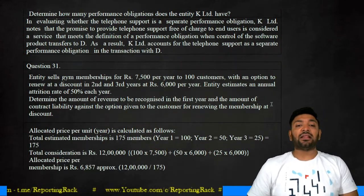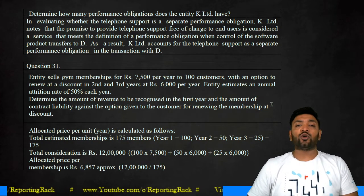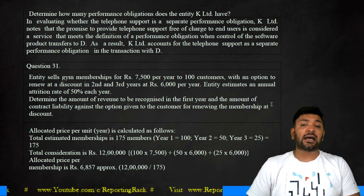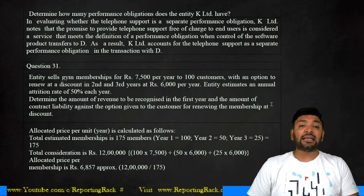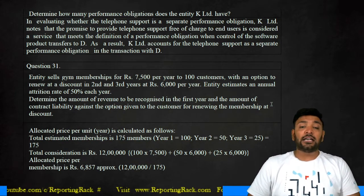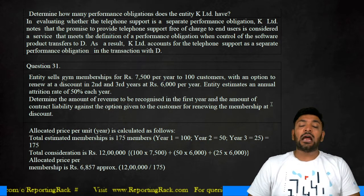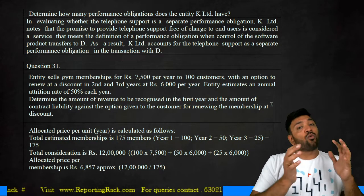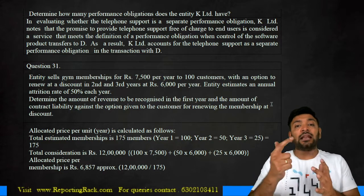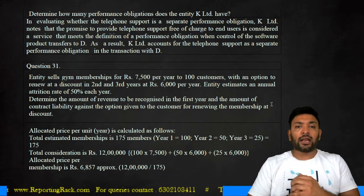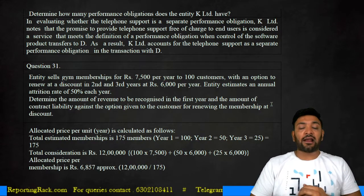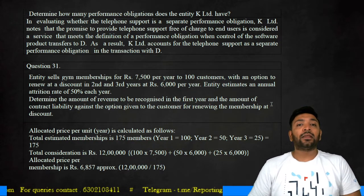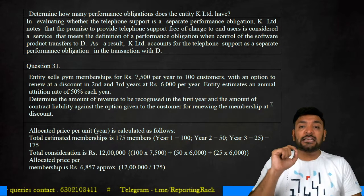Next question: a gym sells memberships at ₹7,500 per year to 200 customers, with an option to renew at a discount in the second and third year at only ₹6,000 per year. The entity estimates an annual attrition rate of 50%. We need to determine the revenue to be recognized in the first year and the liability against the renewal discount option. The customer pays ₹7,500 upfront, and for the next two years will be eligible to subscribe at ₹6,000 — a discount of ₹1,500 per year.